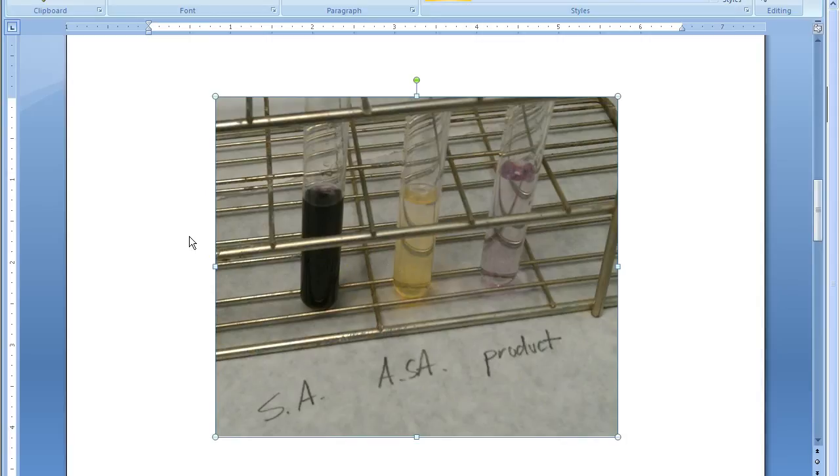Last week, we did this iron-3 chloride test qualitatively, and we were just able to discern visually, this first sample looks pretty pure because we don't see purple. This sample looks impure because we do see purple. Today, or in this week's experiment, you'll be able to put a number onto how much salicylic acid specifically is in each of these based on your standards that you will prepare.